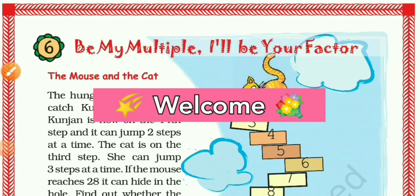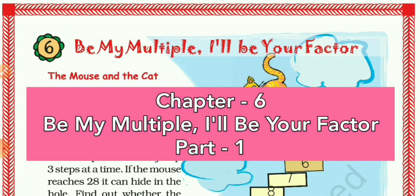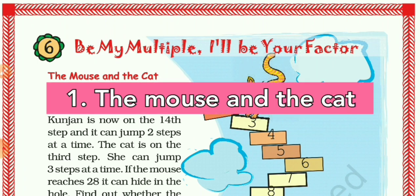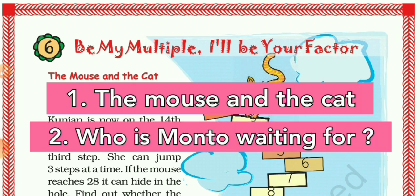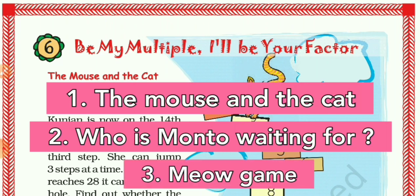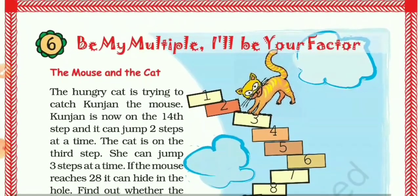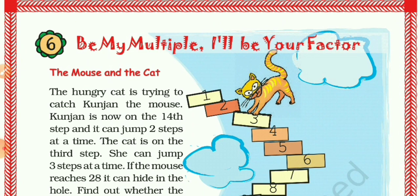Hello dear students and welcome to this online class video. This is the first part of the sixth chapter. I will be your teacher for Class 5 Mathematics, and I am Jay Prakash. The topics of today's class are: the first is 'The Mouse and the Cat', a story based on multiples; the second is 'Who is Monto Waiting For?', a puzzle game; and the third is a new game. Before we understand multiples, we have to do some activities and solve some puzzles.